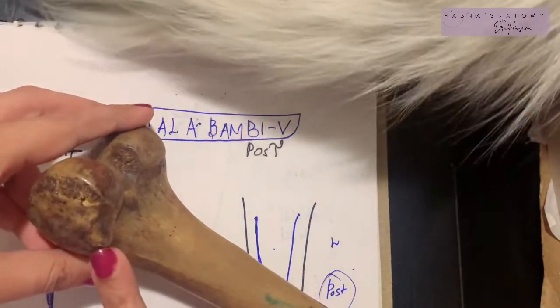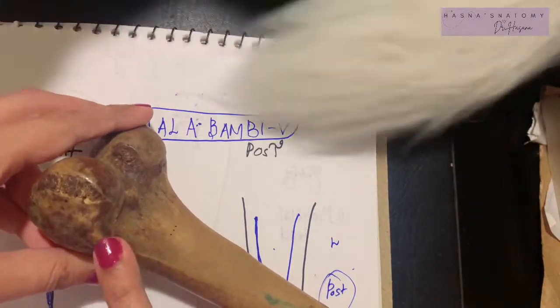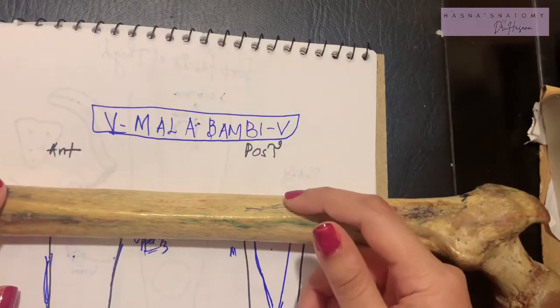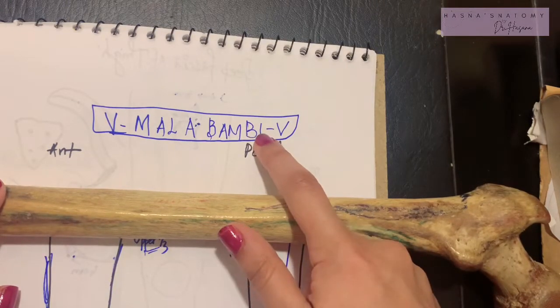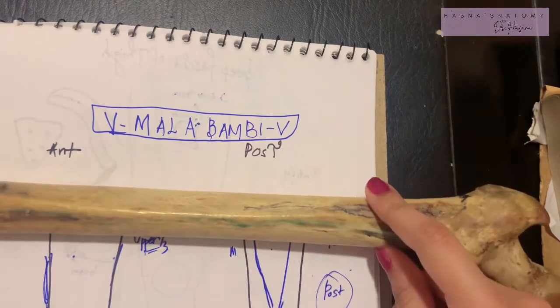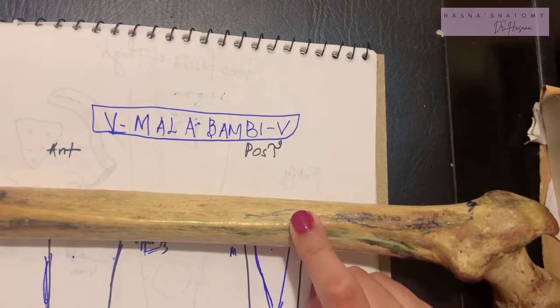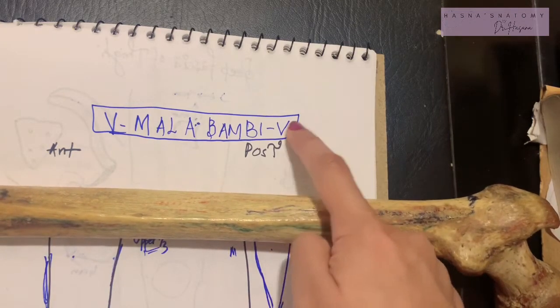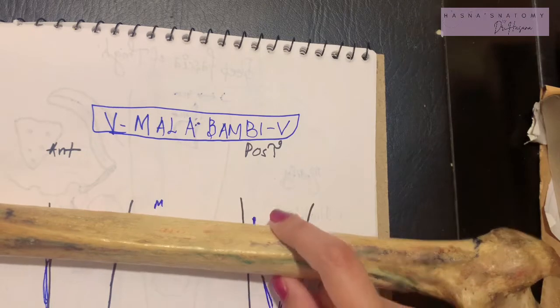Going more laterally, we have BI, the biceps - the short head of biceps femoris - attached to the lateral lip of linea aspera. And finally, another V is for the vastus lateralis, the most lateral muscle of this entire shaft.